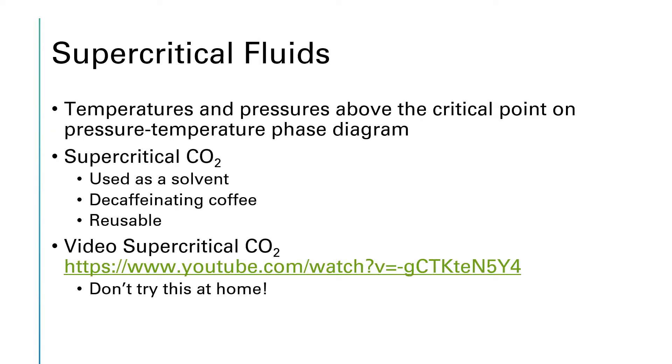So if you go to temperatures and pressures that are above the critical point on that PT phase diagram, you get this thing called a supercritical fluid. It's sort of like a liquid and it's sort of like a gas. CO2 in particular as a supercritical fluid is used as a solvent. It's used for things like decaffeinating coffee, and it is potentially infinitely reusable.